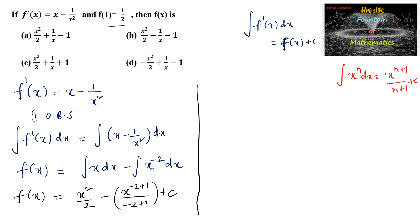Taking the integral constant on only one side, we can write f(x) equals x squared by 2 plus x to the power of minus 1 — since minus 2 plus 1 is minus 1 and denominator minus 1 — so here it becomes plus 1 upon x plus c.